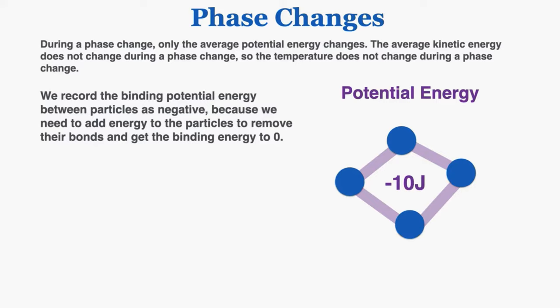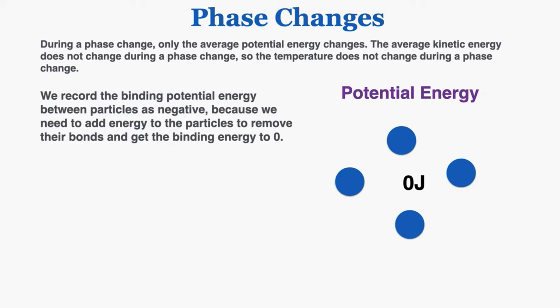We record the binding potential energy between particles as negative, because we need to add energy to the particles to remove their bonds and get the binding energy to zero. For example, if these particles existed in a liquid and it required 10 joules to convert that liquid to a solid, we would say the bonds contain negative 10 joules of energy, because it would require an additional 10 joules to be added to remove those bonds and turn it into a gas. This is basically just a notation trick — we record it as containing negative energy that we can cancel out to remove the bonds. So potential energy is recorded as negative when there are bonds between the particles.